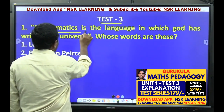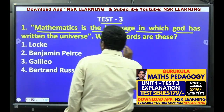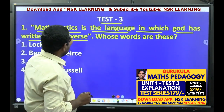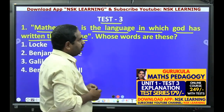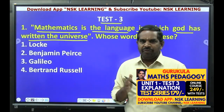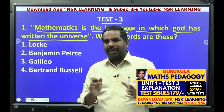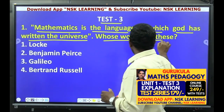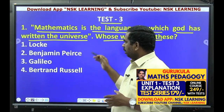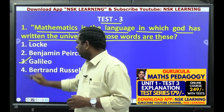First question: 'Mathematics is the language in which God has written the universe.' So, ganita manedi visvam low bhagavantur rasinat vanti uka prachyekamaina bhasha — this statement is chindi. Whose words are these? Options: John Locke, Benjamin Pierce, Galileo, and Bertrand Russell. Answer: Galileo.